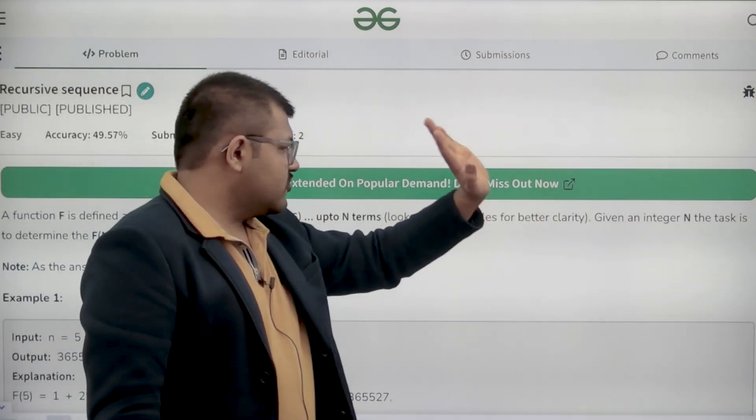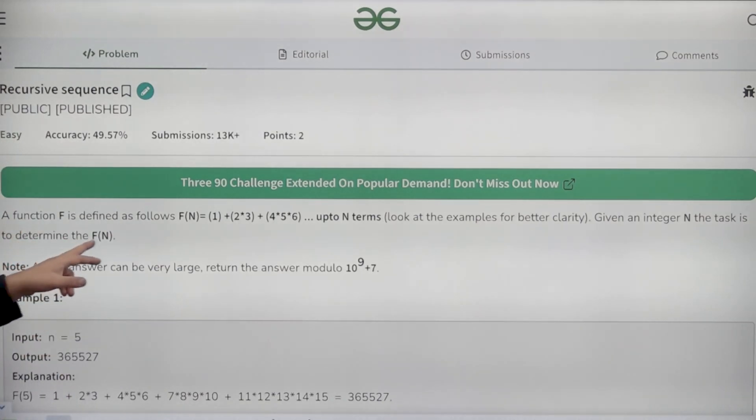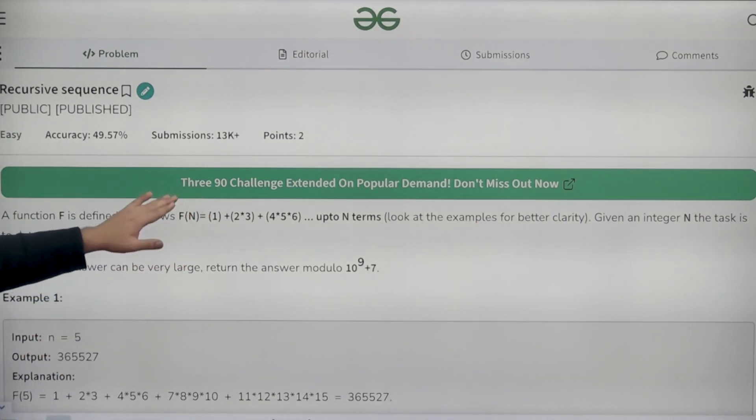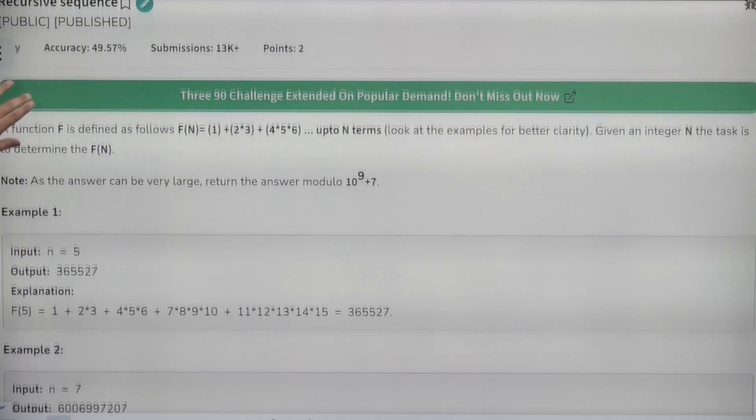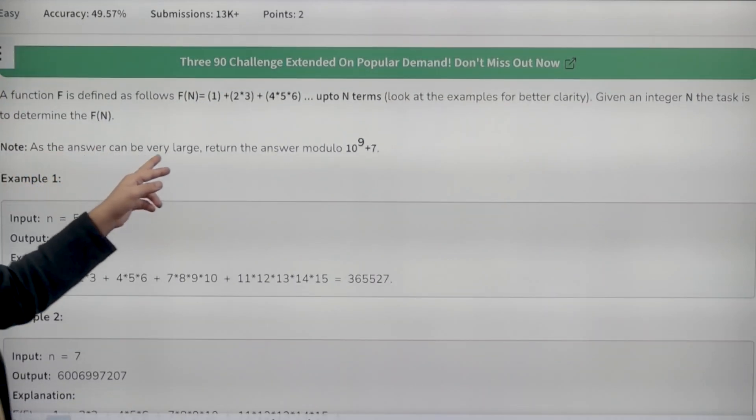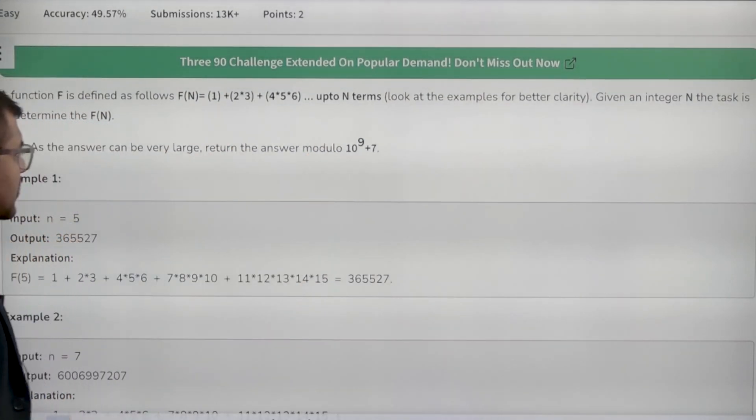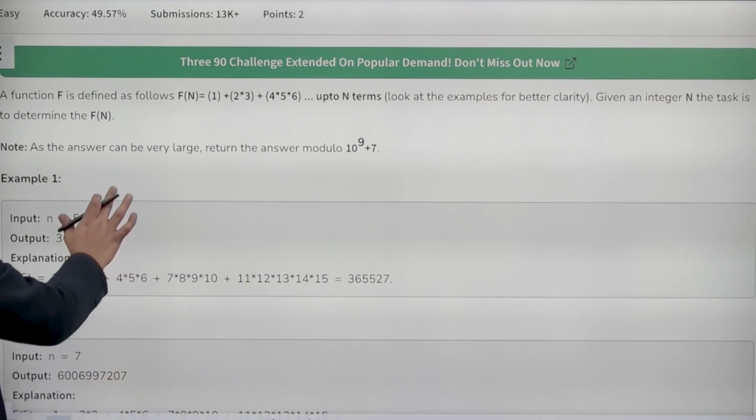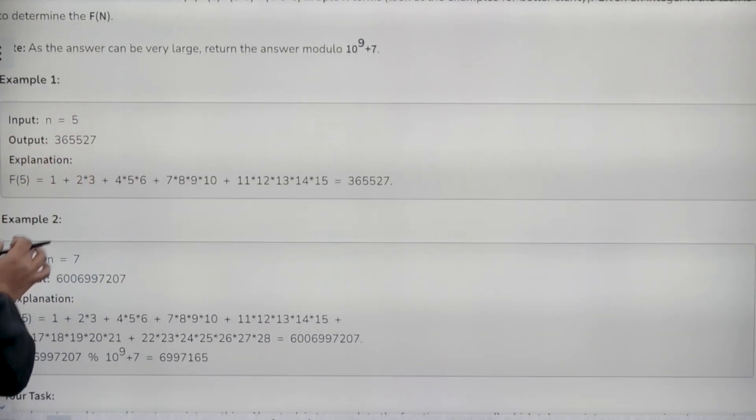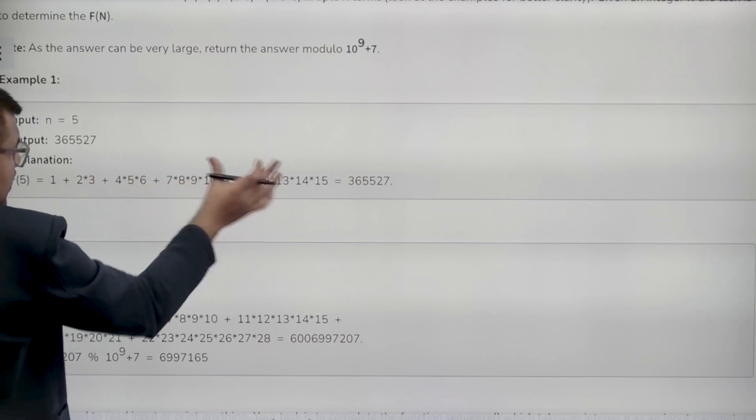Given an integer n, the task is to determine f of n. So, we are given the value of n, we need to determine f of n. As the answer can be very large, return the answer modulo 10 to the power 9 plus 7. So, if n is 5, it will contain 5 terms: first, second, third, fourth and fifth.